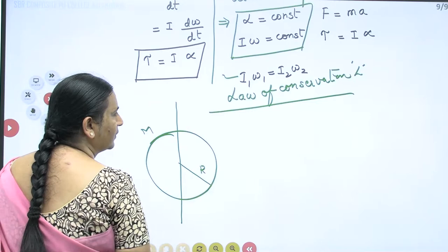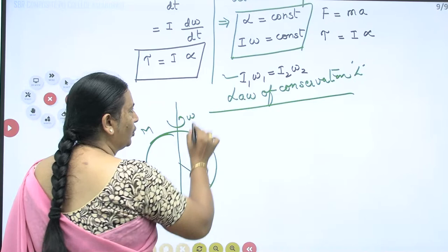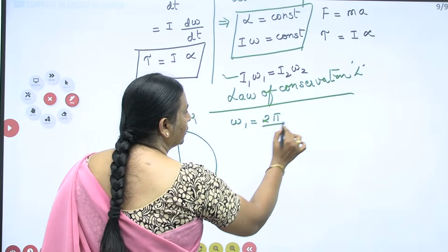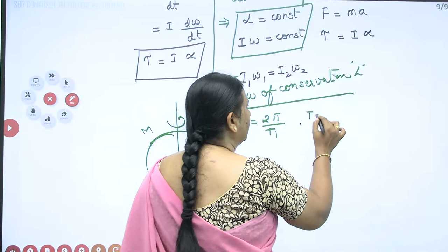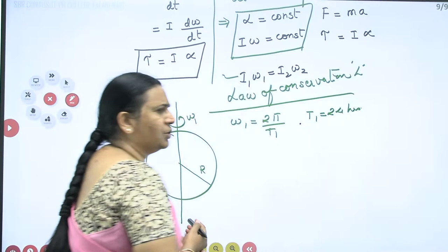Suppose it is already rotating with angular velocity ω₁. So what is ω₁? It is 2π/T — that is nothing but 24 hours right now. Your Earth completes one rotation in 24 hours, so T₁ is 24 hours. Since it is an equation, we can keep the data in terms of hours itself.